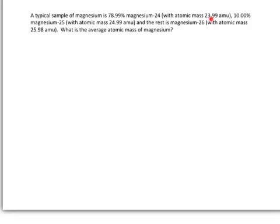In this problem, we're dealing with magnesium, and there are three naturally occurring isotopes of magnesium. We're given the percent abundance of magnesium-24 and magnesium-25, and we're told that the rest is magnesium-26.